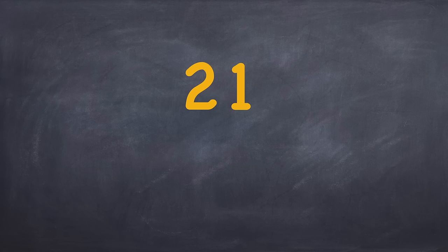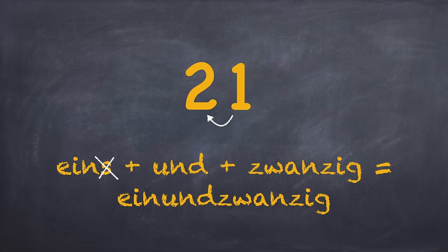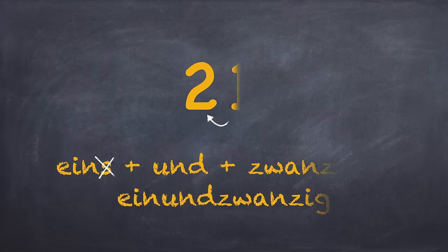In English, you always say the tens number first and the digit after that. In German, it's the other way around. Und is the German equivalent for and. It brings eins and zwanzig together to make it einundzwanzig. In this case, the S from eins goes away.